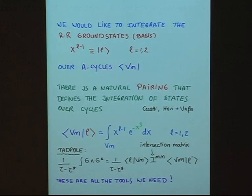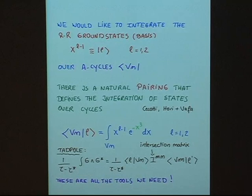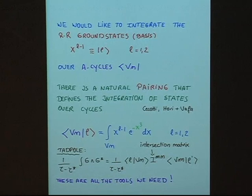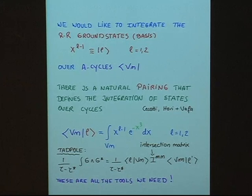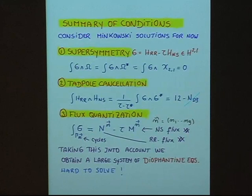What we would like to do is integrate the Ramond-Ramond D-brane states, which look like |V_L⟩ where L can be one or two depending on what primary fields we have. We integrate these states over A-cycles. There is a natural pairing defining the integration of states over cycles, introduced by Chekotty-Orland-Vafa. Taking this pairing into account, we can write the tadpole cancellation condition in terms of this pairing, where I is the intersection matrix.